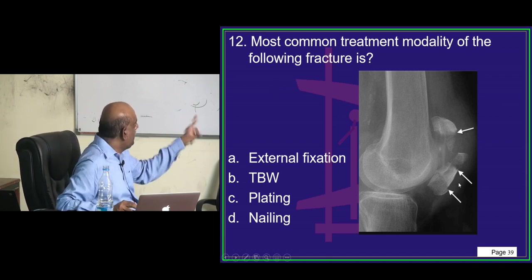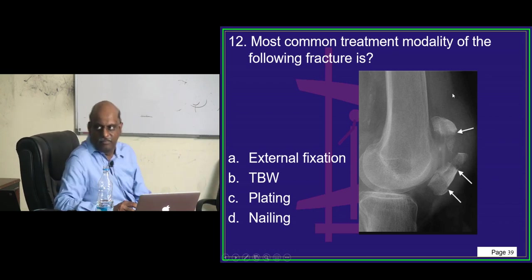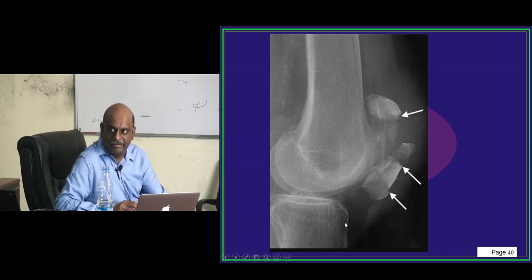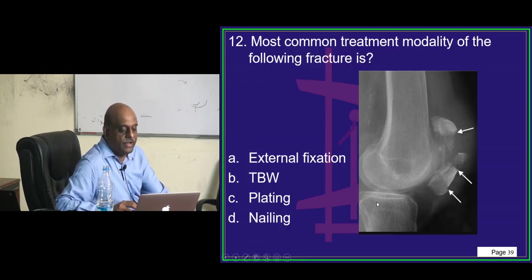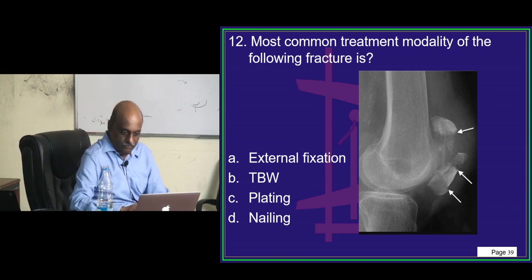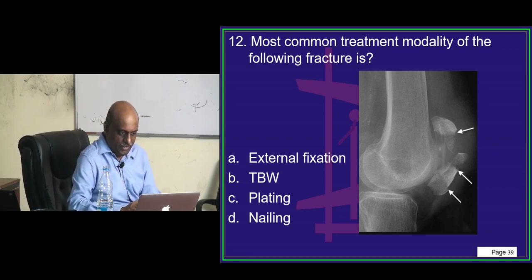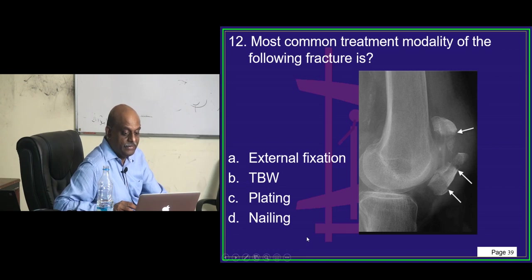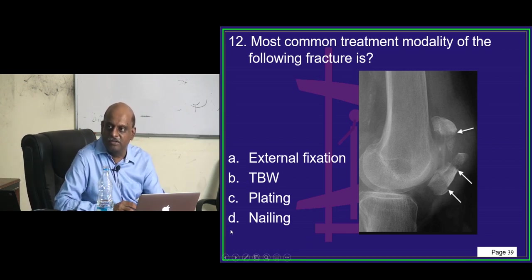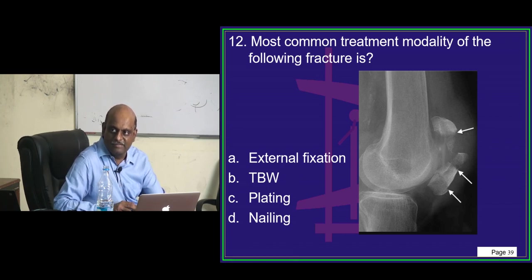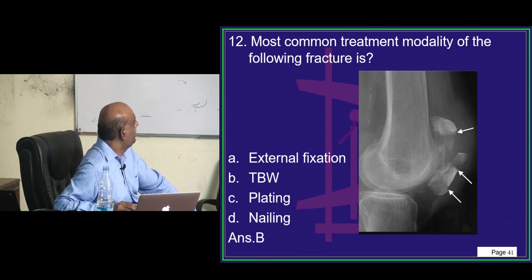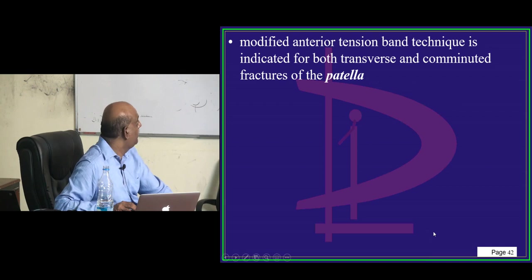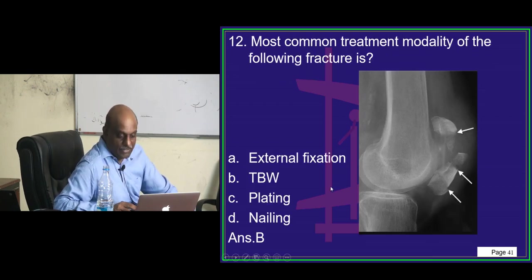Question 12: what is the most common treatment modality for this fracture? Nivedita Basuraju answers, Vanaparthi Vanishri proposes plating, Sam Singh is thinking. TBW — tension band wiring — is the treatment for this comminuted fracture. That is what you need to remember.